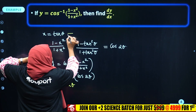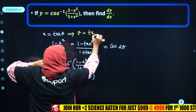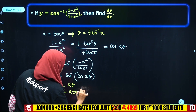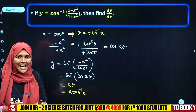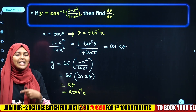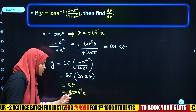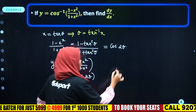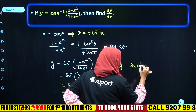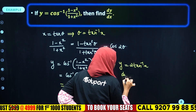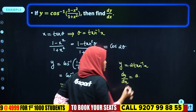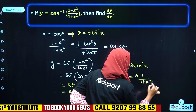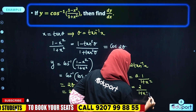Since x = tan θ, we have θ = tan⁻¹(x). Therefore y = 2 tan⁻¹(x). Now differentiating: dy/dx = 2 × derivative of tan⁻¹(x) = 2 × 1/(1 + x²) = 2/(1 + x²). That is the final answer.